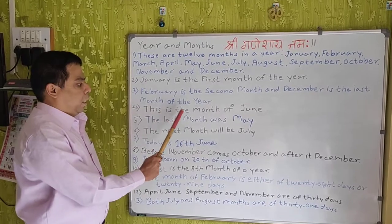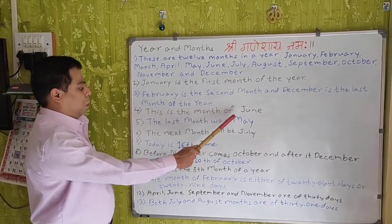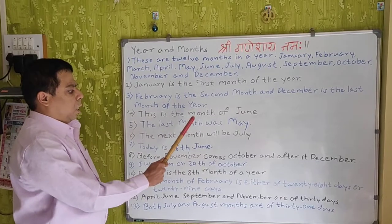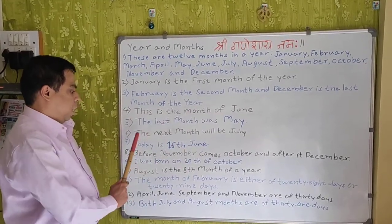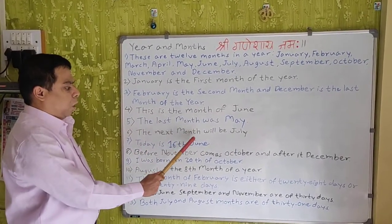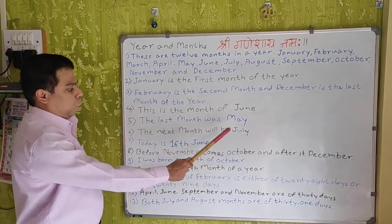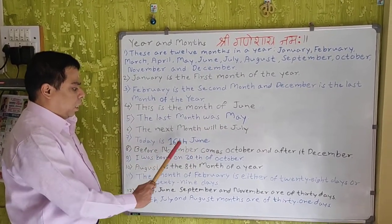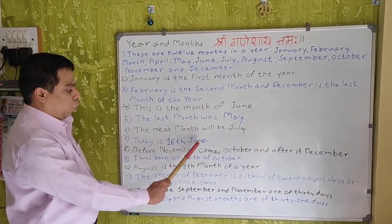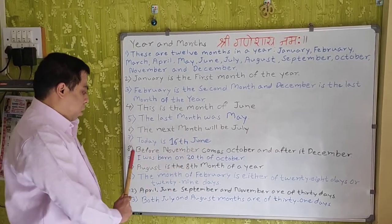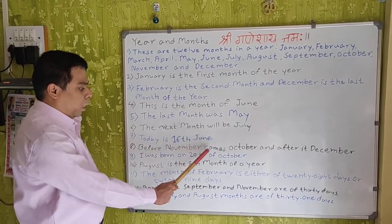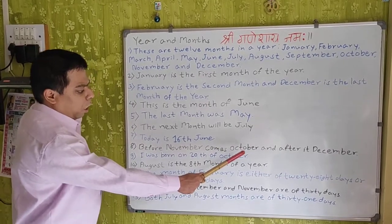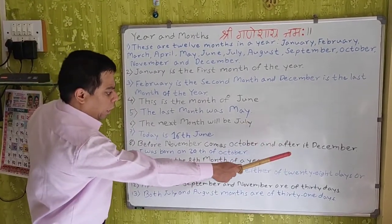This is the month of June. The last month was May. The next month will be July. Today is 16th June.